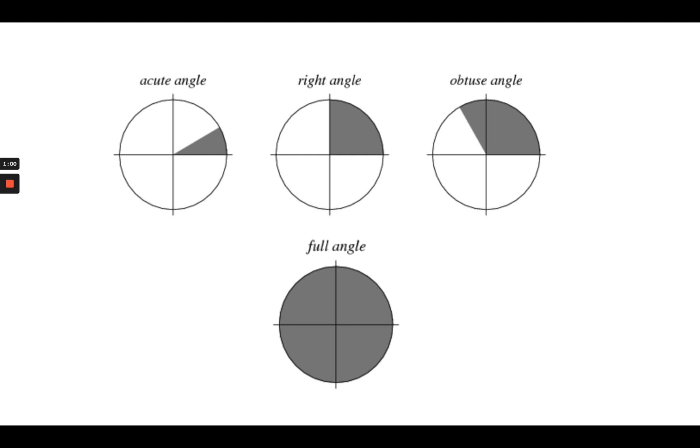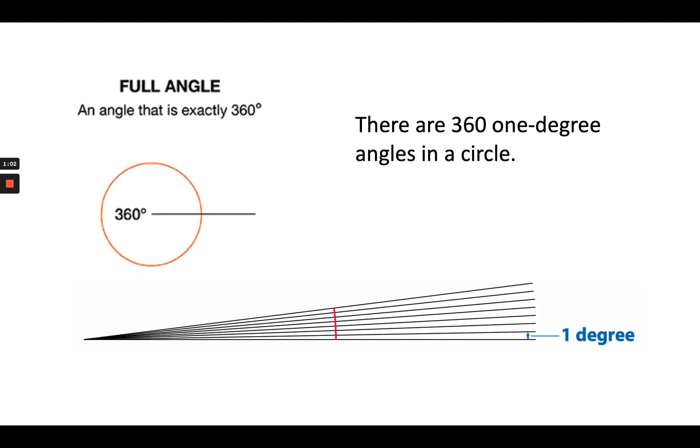That full angle would be 360 degrees. So an angle that is exactly 360 degrees is that full angle. So there are 360 one-degree angles in a circle.